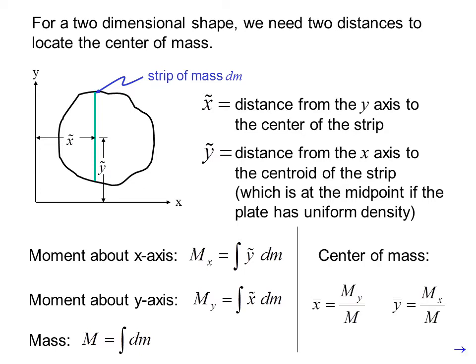The center of mass could be located, then, by finding x̄ as M_y over M, and ȳ, which is M_x over M.